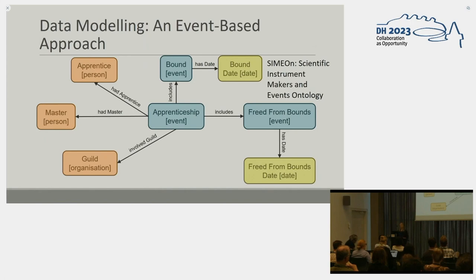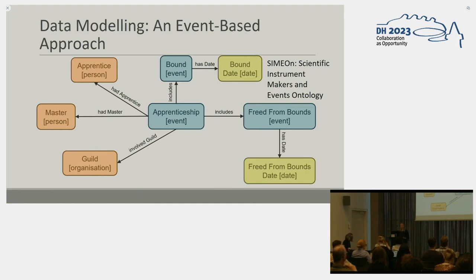To create our data model, we have developed a bespoke events-based ontology, the Scientific Instrument Makers and Events Ontology, or SIMION for short. While its inspiration and some key foundational classes and properties are derived from CIDOC CRM, we soon found that CIDOC, which has a cultural heritage focus, does not provide the level of nuance that we require to describe the diverse life and work events described in our database. These complex events include apprenticeship, which is shown as an example on the slide, as well as employment, flourishing, selling, patenting, and legal processes.